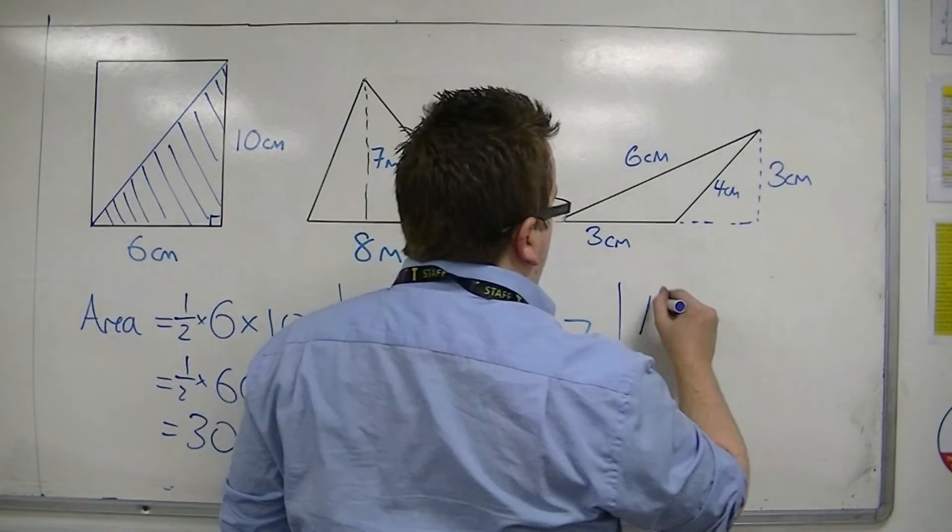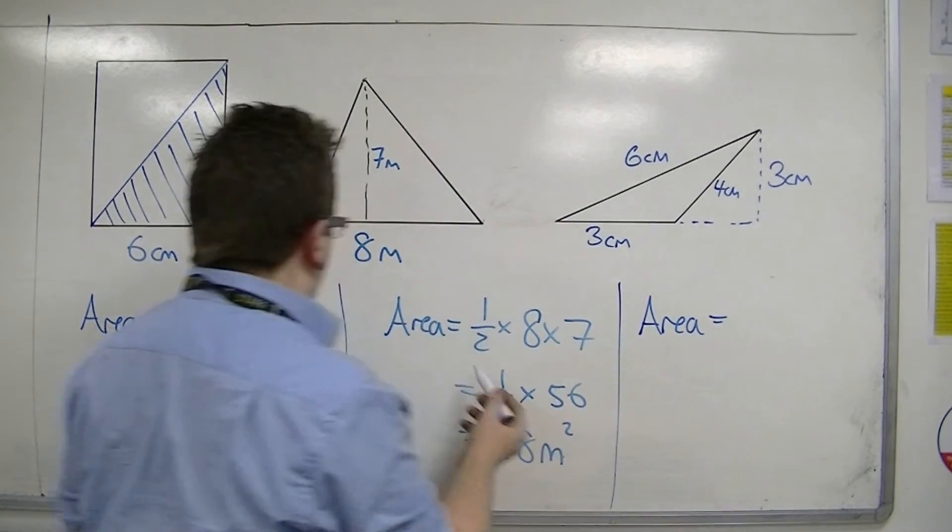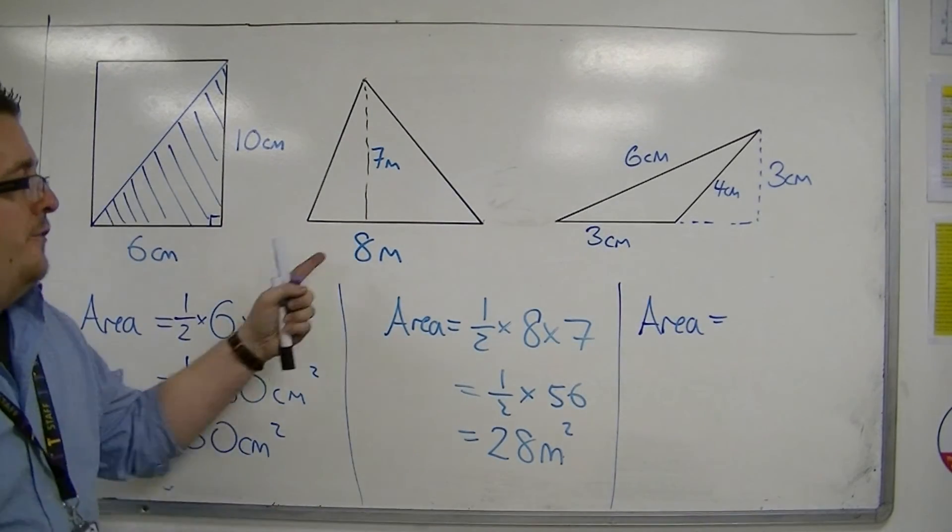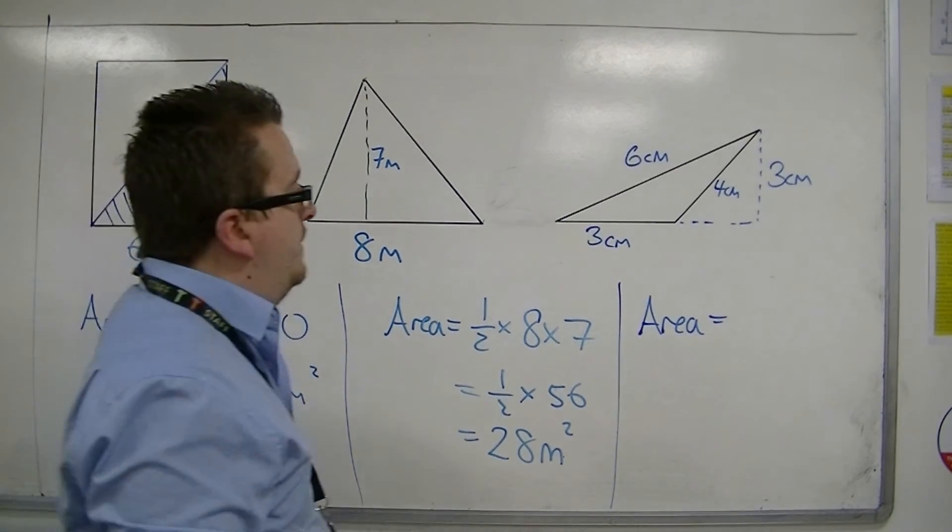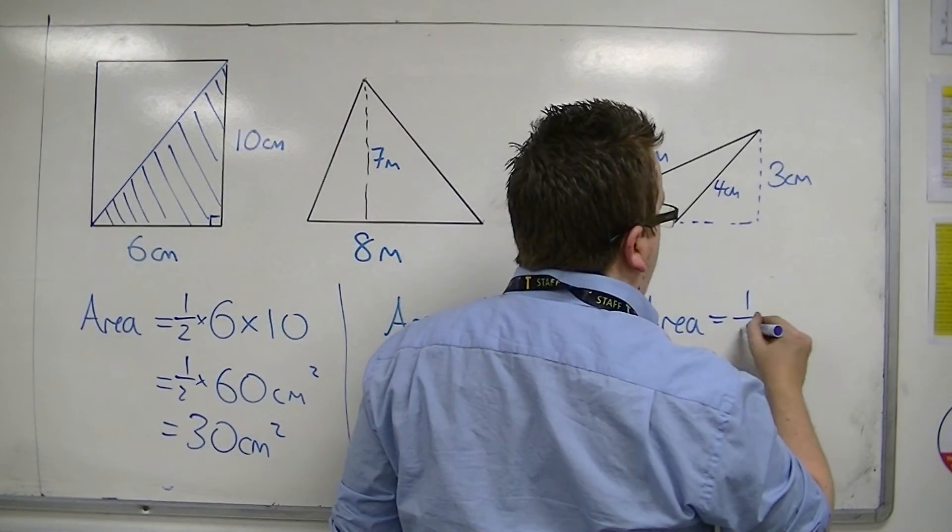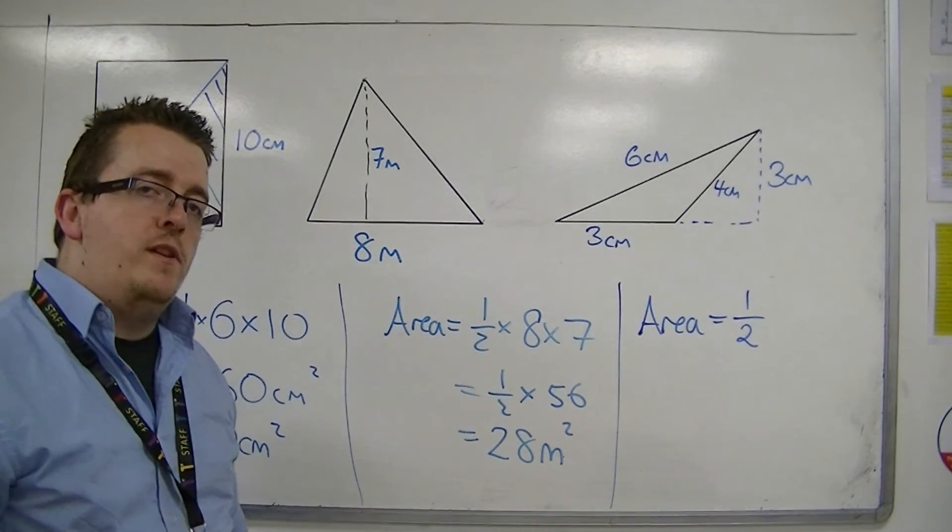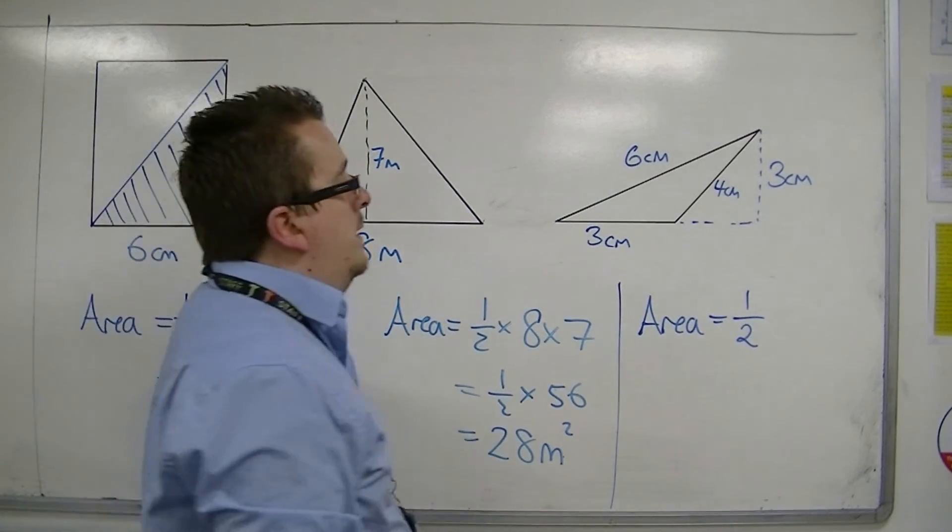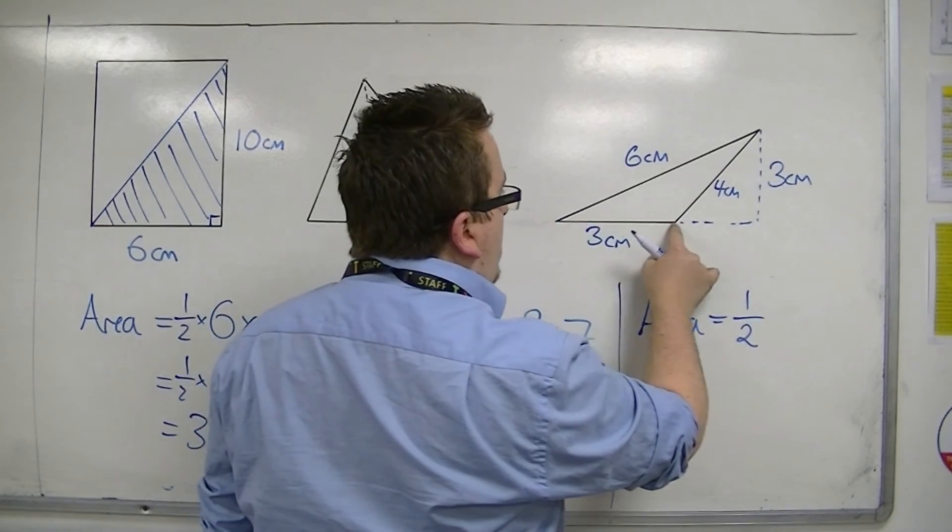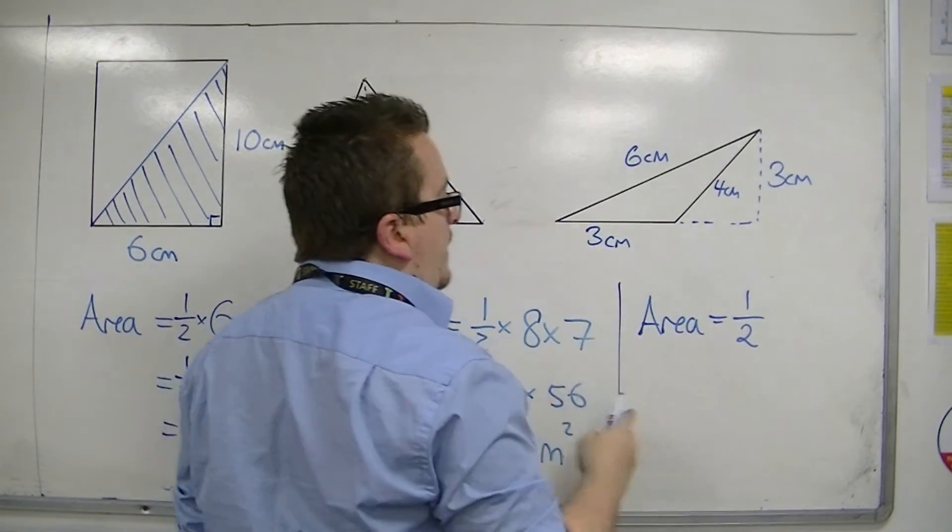The area, as we know from these two examples, was half the base times the height, the perpendicular height. And it's exactly the same here. You may well be given a diagram that has more information on it than you actually need. The base is this length here, the 3 centimetres.